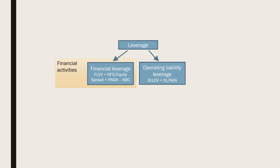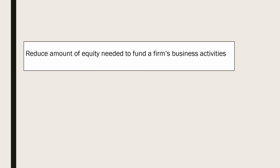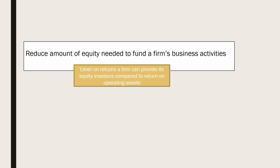One is leverage because of a firm's financial activities; the other is leverage because of a firm's operating activities. These two aspects of leverage combine to reduce the amount of equity needed to fund a firm's business activities. In this way, they act as a lever on the returns a firm can provide to its equity investors compared to the return it can earn on its operating assets.